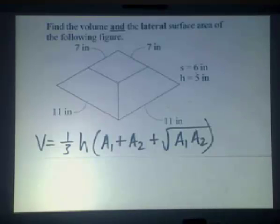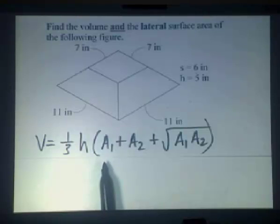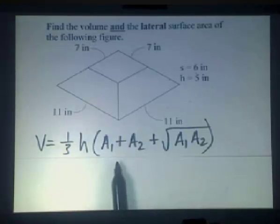To find the volume, it's equal to one-third times the height times the quantity area one, and that's the area of the small base, plus area two, which is the area of the large base, plus the square root of the product of the two areas. That is, we're going to multiply the areas, then take the square root.